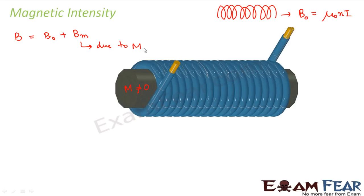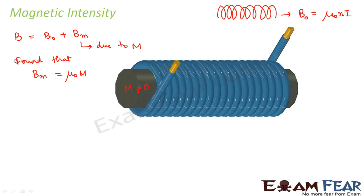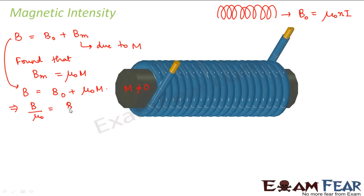After the material is inserted, the magnetic field becomes the initial magnetic field plus a new magnetic field introduced due to the magnetization of this material. It was found experimentally that this newly introduced magnetic field was proportional to the magnetization M. So we can write: B = B₀ + μ₀M.